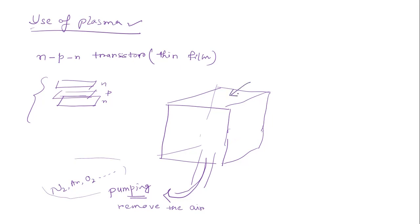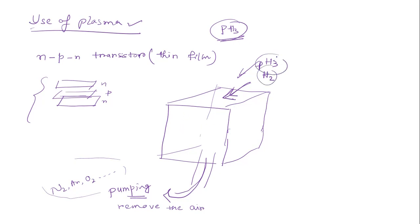After evacuation we inject the proper gases — for example hydrogen plasma, or phosphine (PH₃) for the N-layer of the NPN transistor. The chamber is then filled with the proper gas which can be ionized to form the thin film. For ionization we supply RF power or microwave power into the chamber.